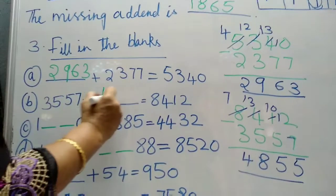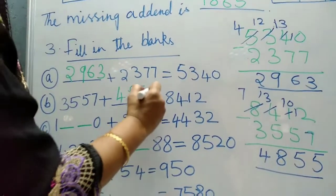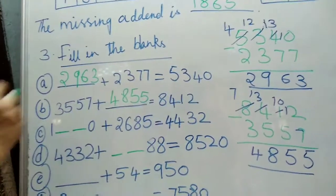13 minus 5 is 8. So this is your one addend. 4, 8, 5, 5. You add these 2 and see you will get this answer.